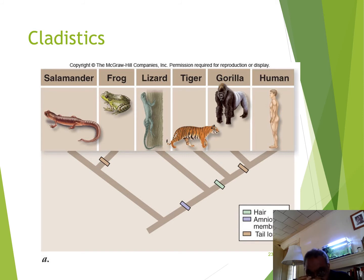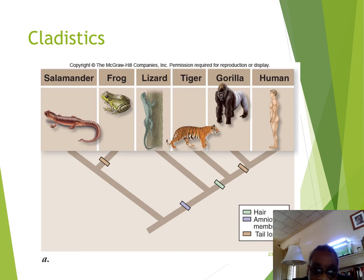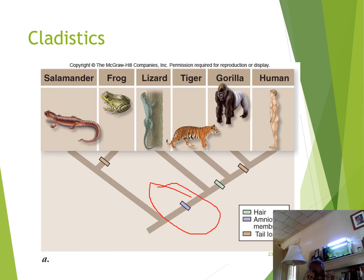Here's another cladogram relating amphibians, reptiles, and mammals — including tigers, gorillas, and humans. Looking at the difference between the ancestor for salamanders and frogs versus all other chordates, what distinguishes them is the evolution of an amniotic membrane. The amniotic membrane represents a major break in this line of chordates — basically the evolution of external eggs in the case of lizards, and internal eggs in the case of tigers, gorillas, and humans.